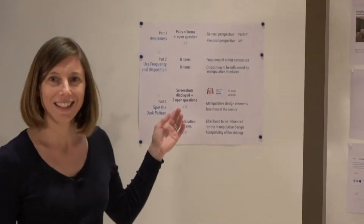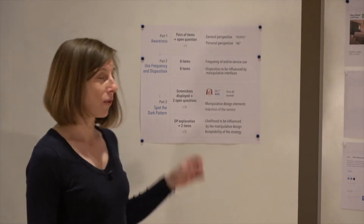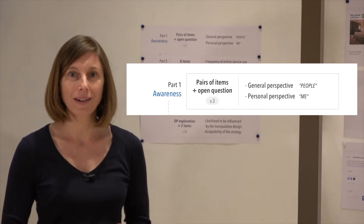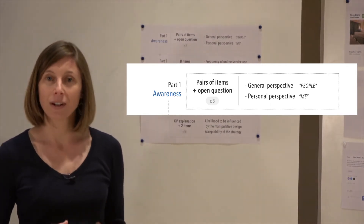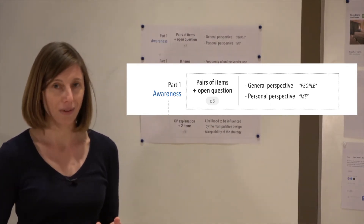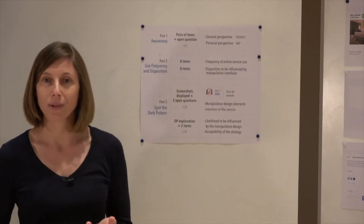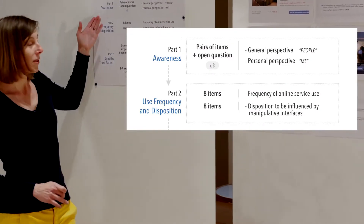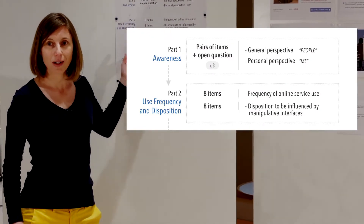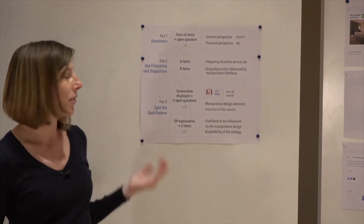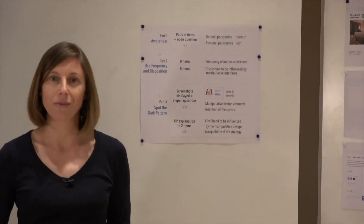This is why we decided to run a user study, and we're going to show you what we did. Here's our study design. We start with the first part, where we show the participants three statement pairs to measure their awareness of dark patterns in online interfaces. They were supposed to rate each pair on a five-point Likert scale. And after this first part, we move to the second part to gather some demographic information, among others the frequency of online service use.